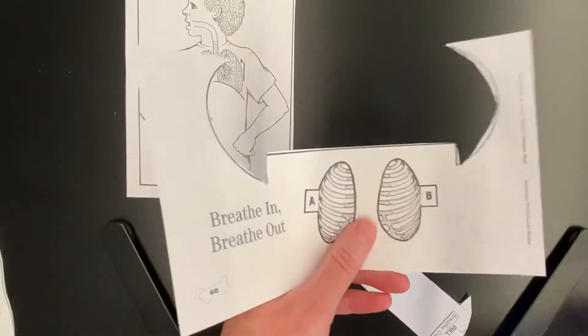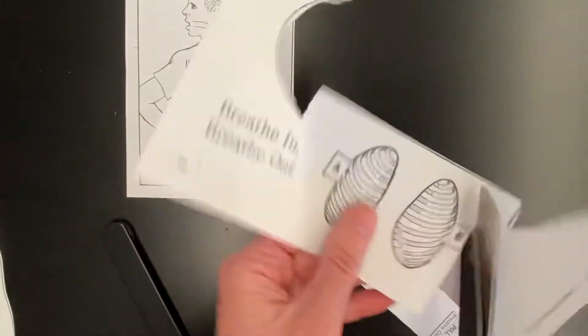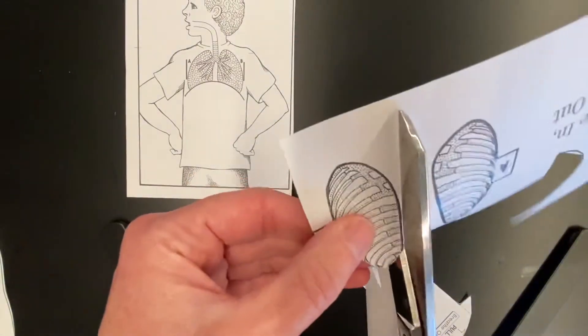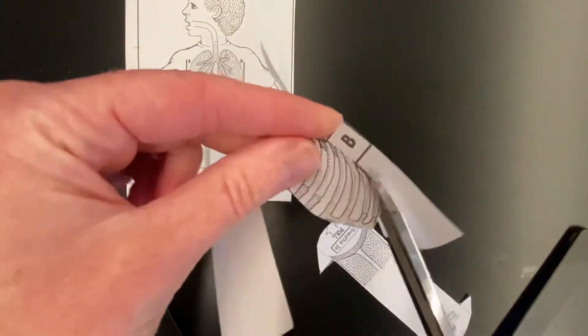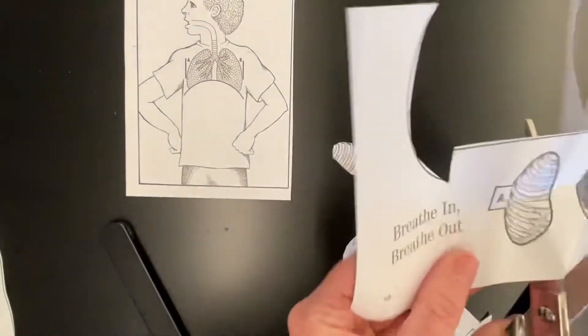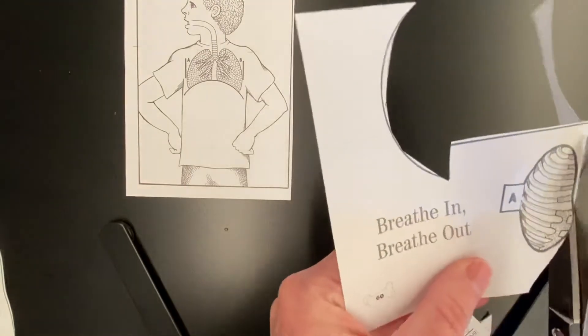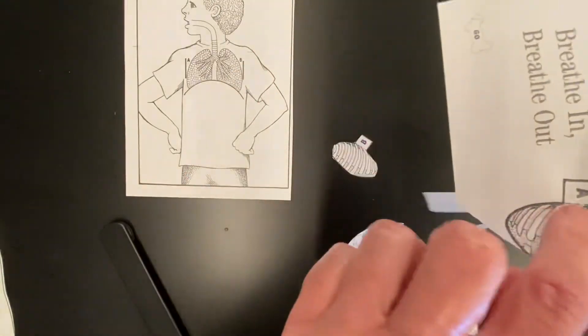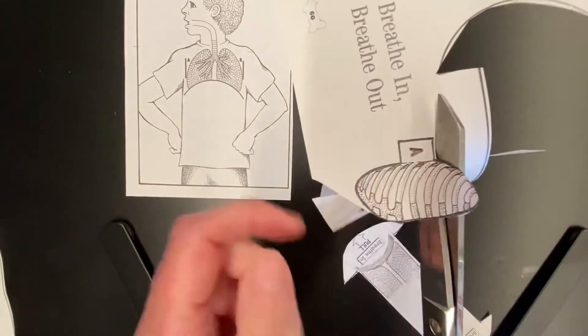Then I'm going to cut my little ribcages out. Make sure you leave those little letters attached.